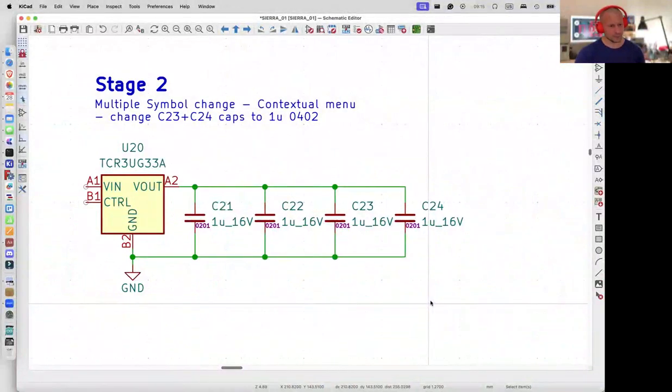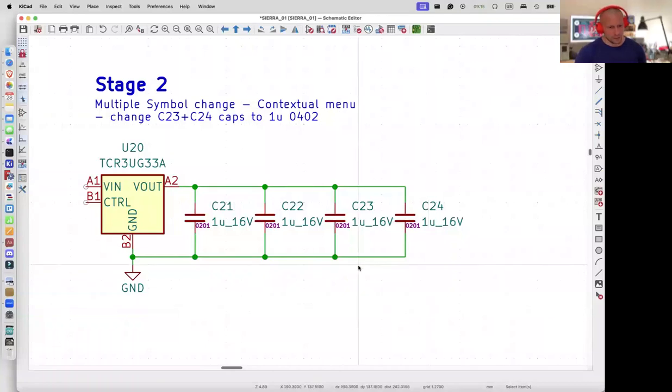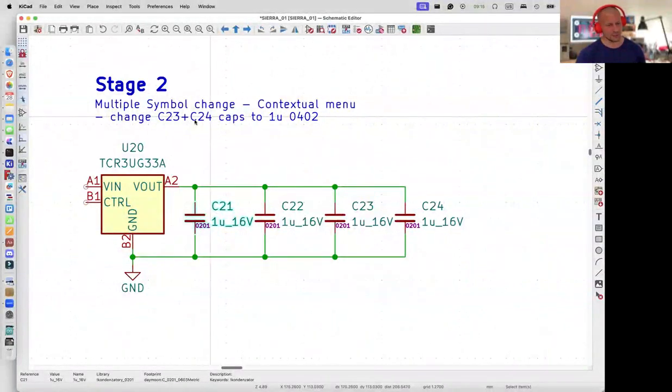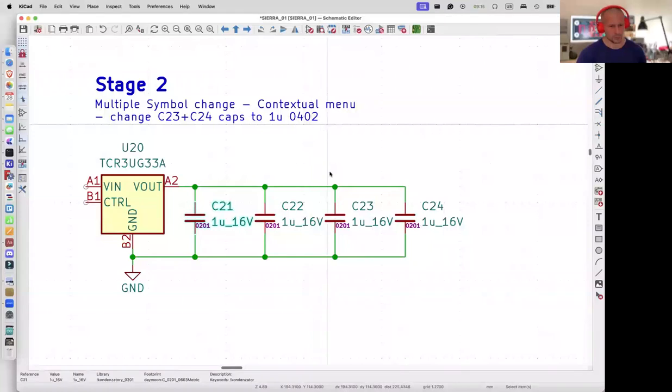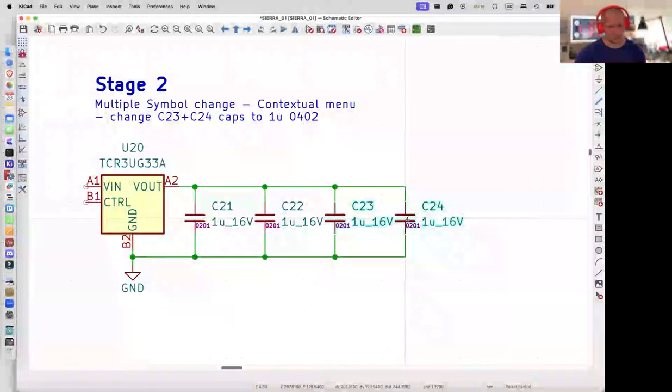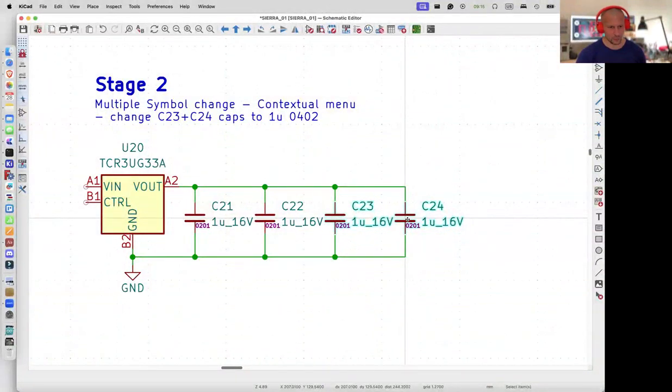Stage two: Multiple symbol change. I showed you that the symbol property can be used for symbol change, but not for multiple symbols. The task is to change C23 and C24 to 0402. I will select multiple capacitors, multiple symbols, but the E key doesn't work because the property window is functioning only for a single symbol. When we want to change multiple symbols, we need to go to the contextual menu.